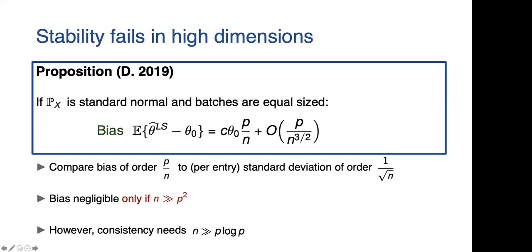But if we believe the error rates before, the consistency only needs n is at least p log p. So there's a gap here that basically appears only if the dimension is comparable with n reasonably. This is the key reason why you see the bias appearing in the simulations that we saw earlier.